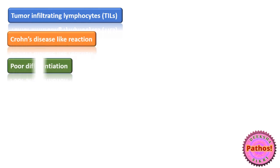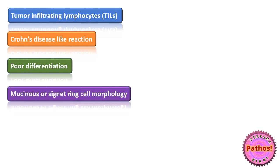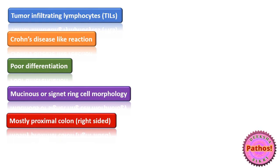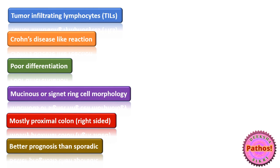Looking at colon cancer occurring in Lynch syndrome, there are features on microscopy which prompt us to consider it: tumor infiltrating lymphocytes, Crohn's disease-like reaction, poor differentiation, signet ring cell morphology or mucinous morphology. Usually it occurs on the right side, proximal colon, and it tends to have slightly better prognosis compared to sporadic colon cancers.